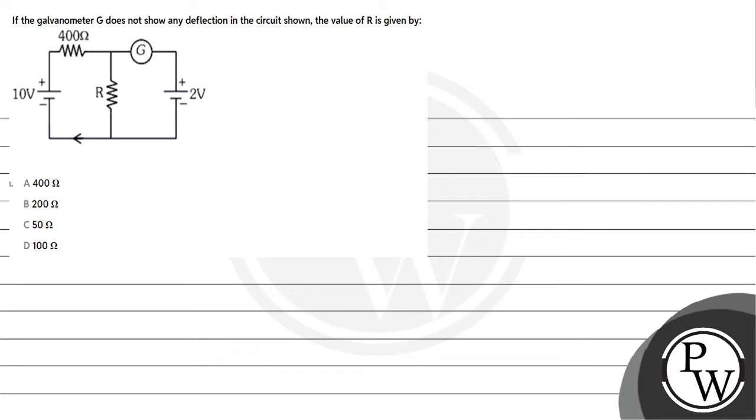Hello, let's read the question: if the galvanometer G does not show any deflection in the circuit shown, the value of R is given by. So here our key concept is if galvanometer shows no deflection.